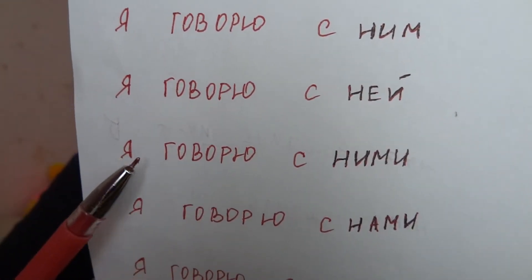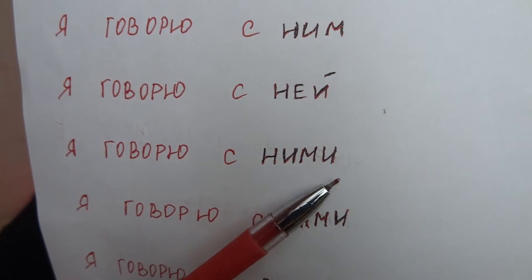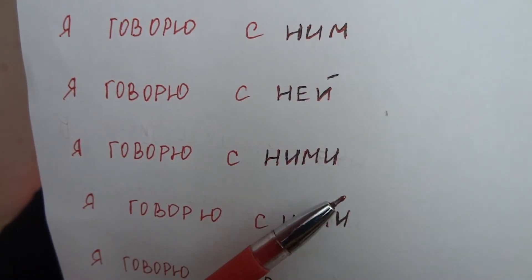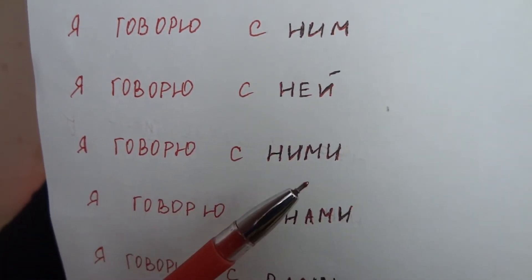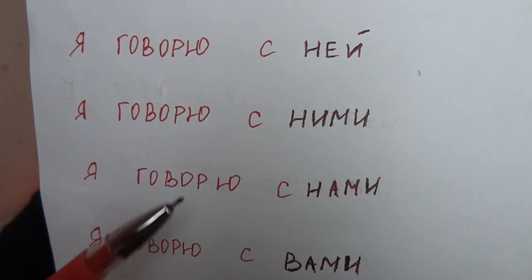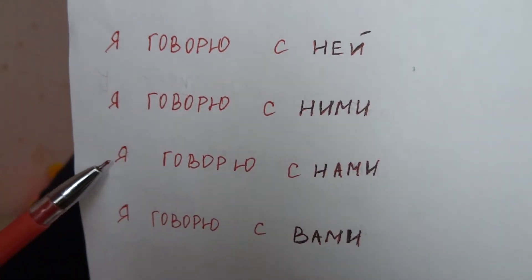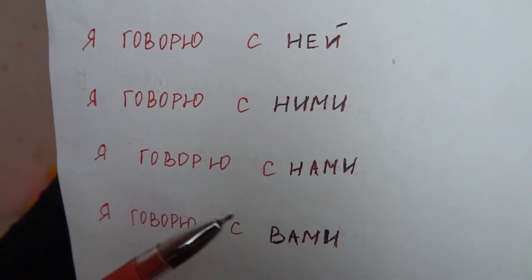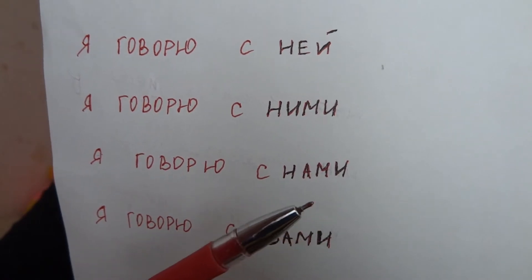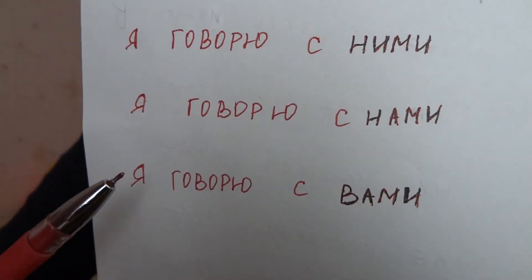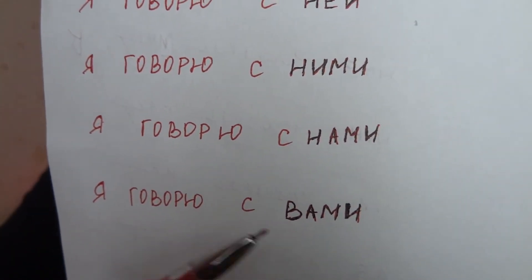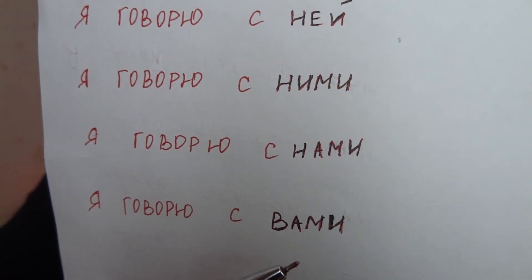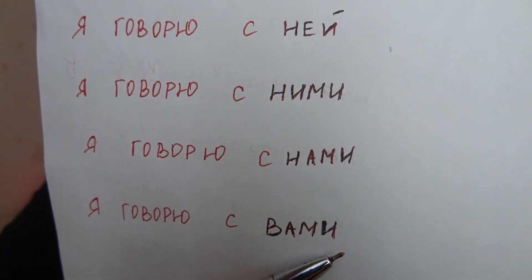Я говорю с ними — I talk with them. Я говорю с нами — I talk with us. Я говорю с вами — I talk with you.